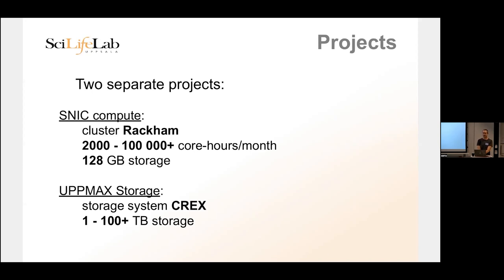When you get a default calculation project, you get it on Rackham. The default size is 2,000 core hours and 120 gigabytes of storage. This is plenty for a physics project, but for bioinformatics you need a storage project. The default storage size is probably around half a terabyte, but you can just say you want two terabytes and they'll say no problem. The calculation allocation is always fixed at 2,000 core hours. In this course we only have one calculation project, so we only have to remember the one SNIC 2022-22769 number.